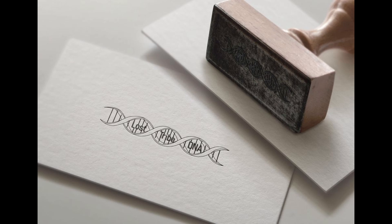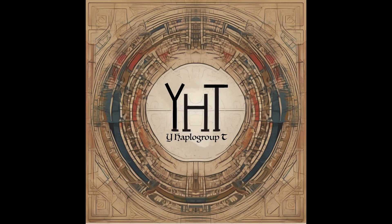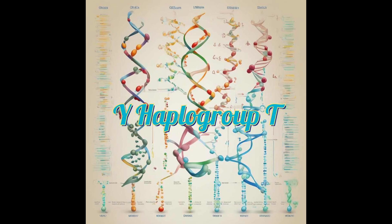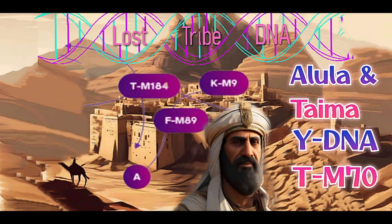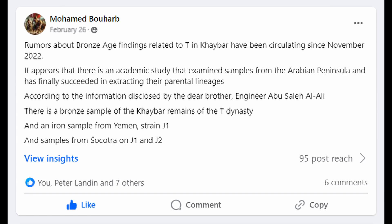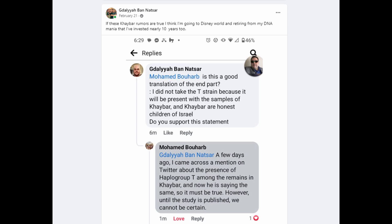Thank you for tuning in to Lost Tribe DNA. Please subscribe to get our new content. We are currently working our way backwards from Haplogroup T to Haplogroup A. We started with our small series on Haplogroup T, and we are hoping to have data from the Alula and Tima region in Arabia. A paper about this region has been rumored for a while now, and the DNA community is anticipating it.